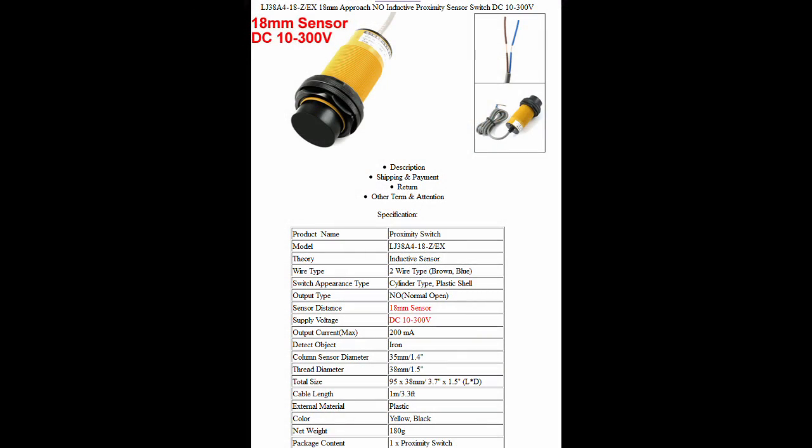This is the data sheet of the sensor I'm using. With a switching distance of 18 mm, it was the biggest one I found and also the cheapest one. The Chinese seller on eBay charges only 8 euros for it.